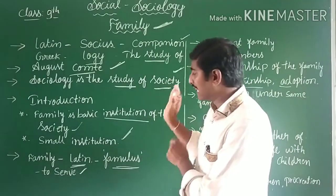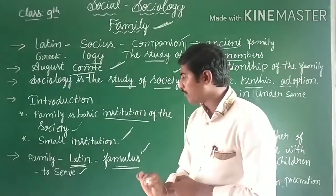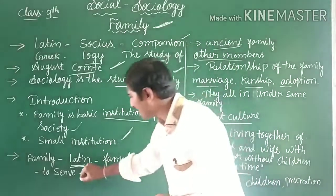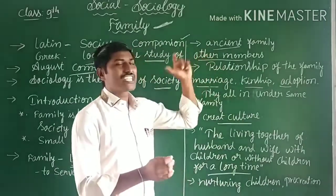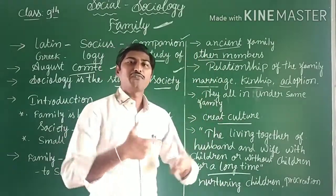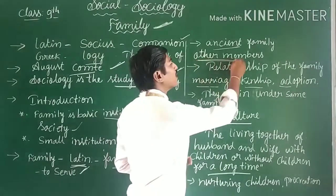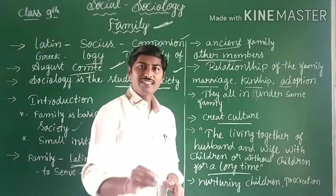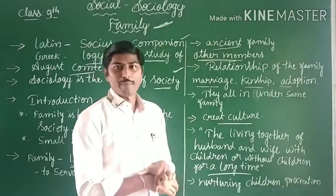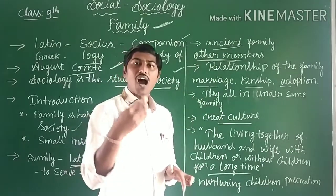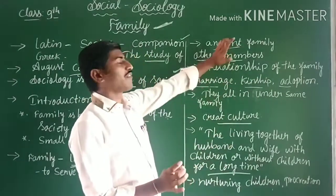The word 'family' is derived from the Latin word 'familius,' which means to serve. From this we understand the concept of the ancient family. In the ancient family, it included other members — parents, that is father and mother, and children. Other members such as uncles, aunts, siblings, brothers, and sisters were all included in the family. That was the ancient family concept.